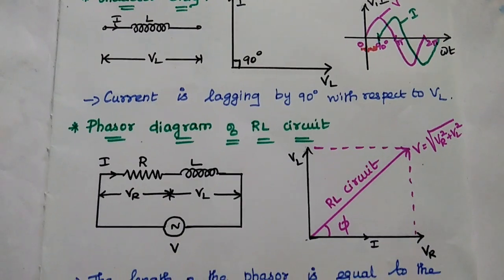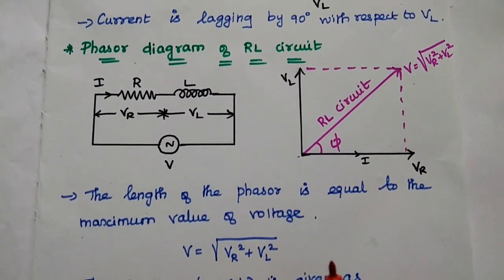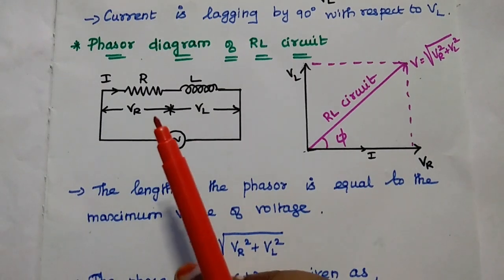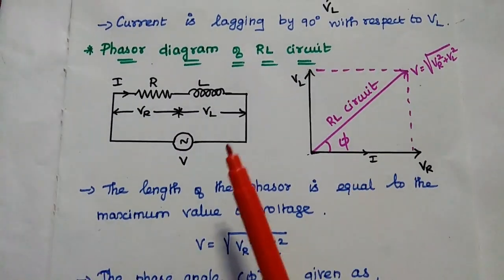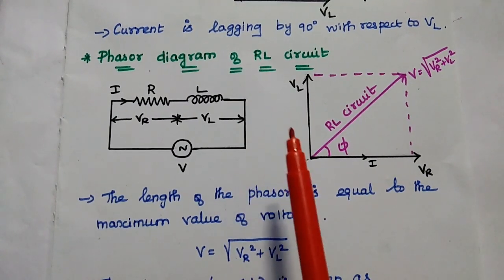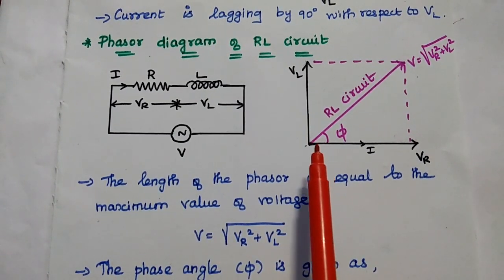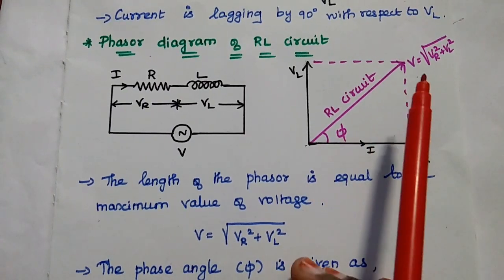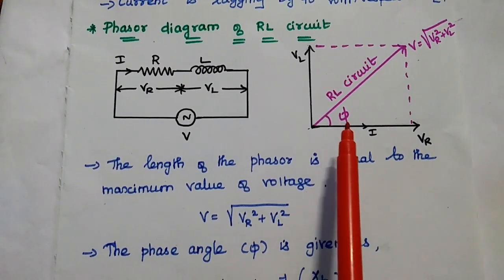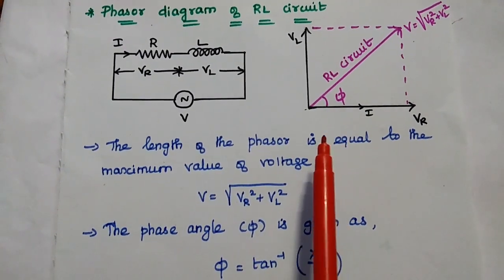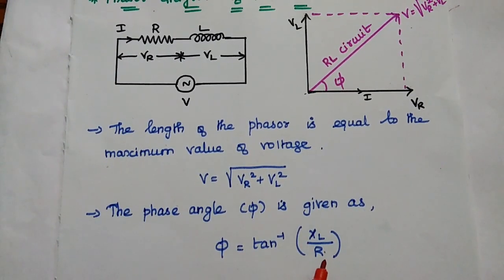We can find the phasor diagram of the RL circuit by combining the resistor-only and inductor-only circuits. The voltage drop across the resistor is directly proportional to the current, but the current due to the inductor lags by 90 degrees with respect to VL. The resultant RL series voltage is V equals the square root of VR squared plus VL squared, with a phase angle φ. This phase angle is obtained by taking the inverse tangent of the imaginary part of impedance to the real part.